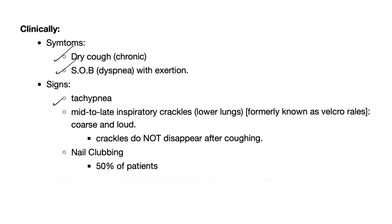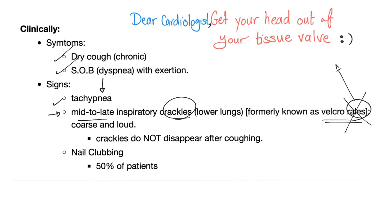Symptoms of idiopathic pulmonary fibrosis: dry cough and dyspnea. Signs: tachypnea, because if there is dyspnea there is tachypnea. You'll hear crackles — mid to late inspiratory, formerly known as Velcro rales. In IPF, the crackles do not disappear after coughing — you cannot cough out your fibrosis. Nail clubbing occurs in 50% of patients.